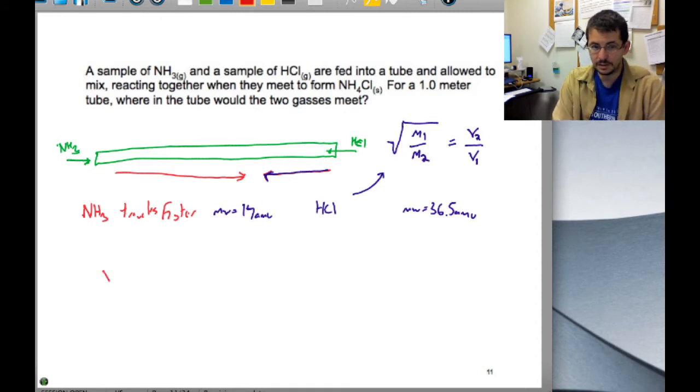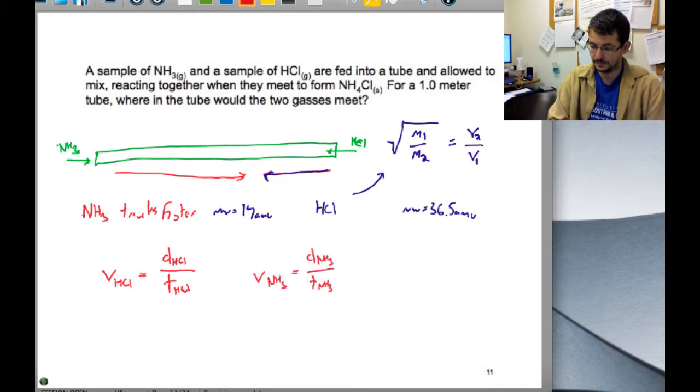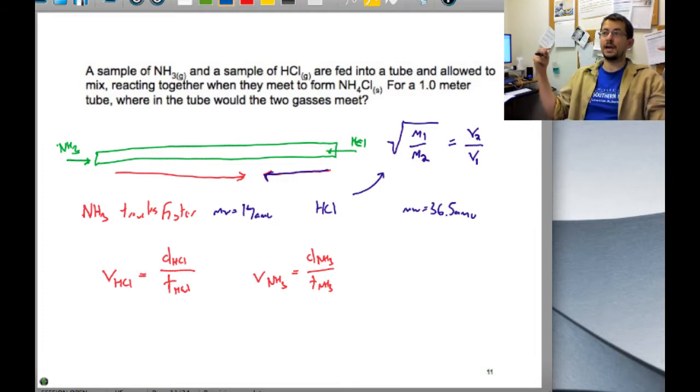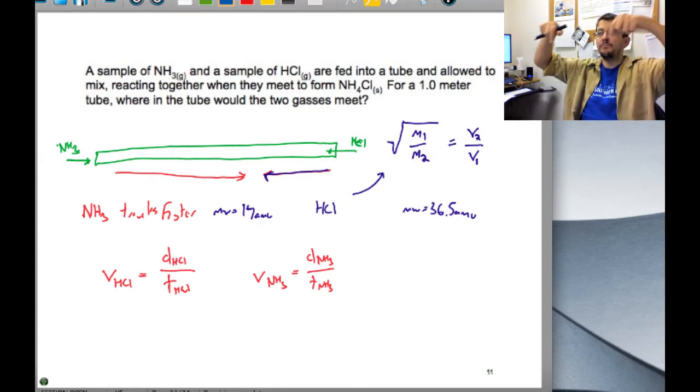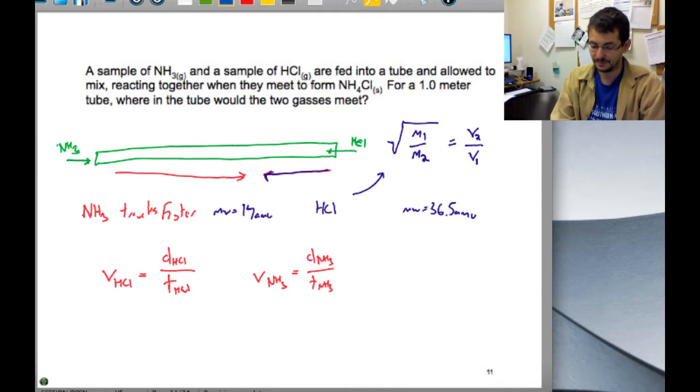Luckily for us, though, the velocity of HCl is equal to the distance the HCl travels divided by the time it travels. We can set up a similar calculation for the ammonia. What's not obvious is that when two gases travel, the place where they meet represents the time at which they've both traveled the same amount of time. We open the bottles at both ends at the same time, they'll meet when their times are equal. So THCl equals TNH3.